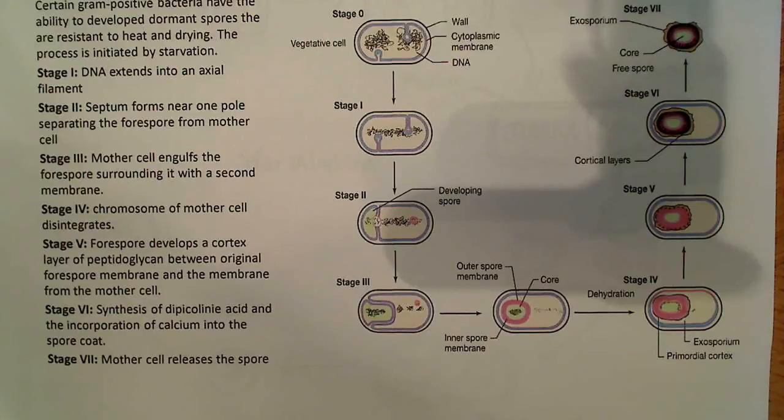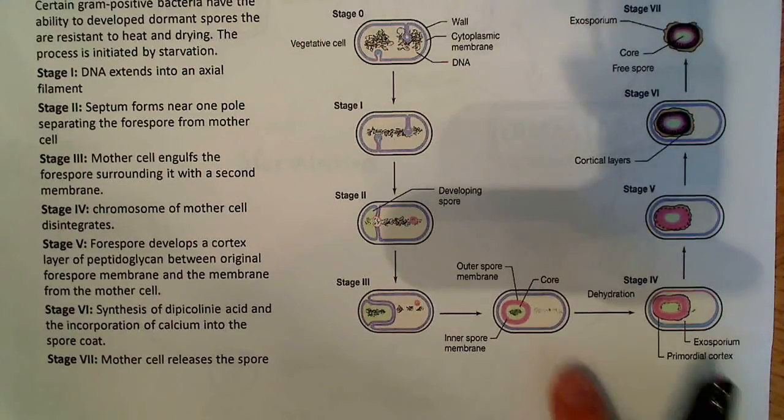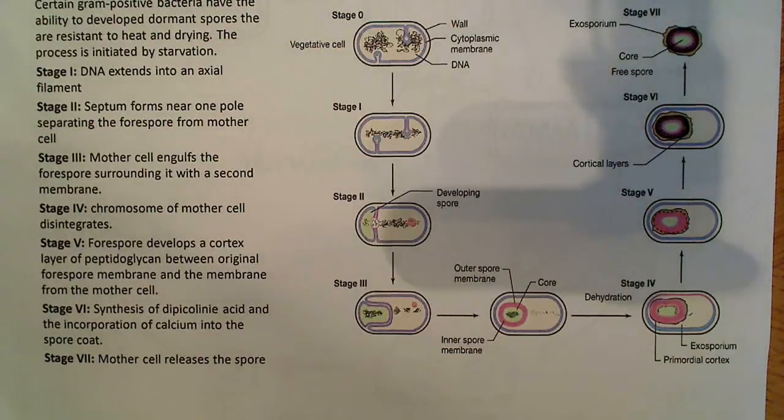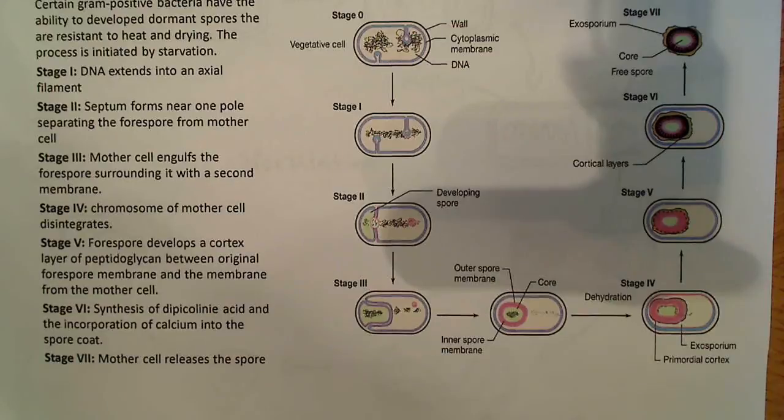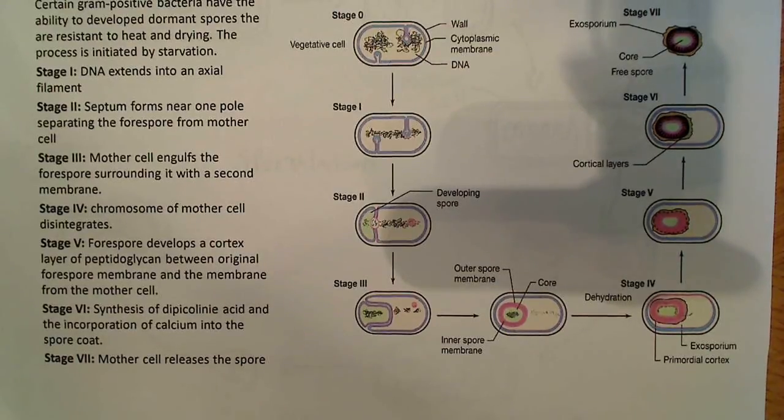So after it engulfs the forespore, the chromosome of the mother cell disintegrates. So essentially, what's happening here is the mother cell is gone. This cell is eventually going to disintegrate, and you're going to release the forespore at some point. So it's actually removing portions of the mother cell as you go along. And one of the things that happens in stage four is the chromosome of the mother cell disintegrates.